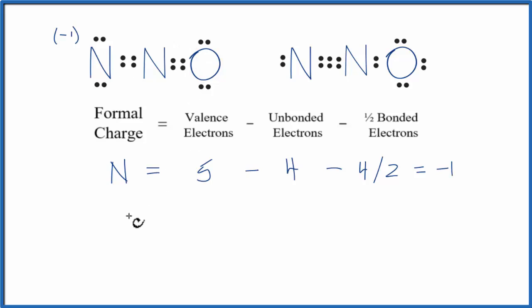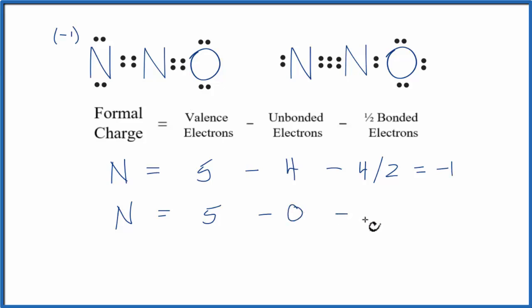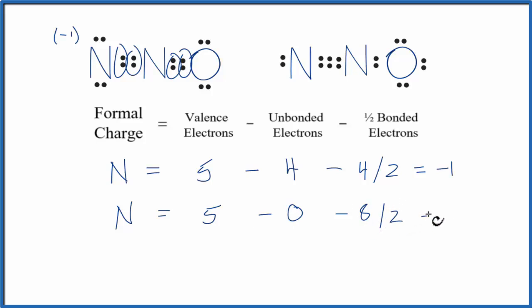Let's do the central nitrogen. Nitrogen has five valence electrons. Subtracting the unbonded — for this nitrogen, they're all involved in chemical bonds, so we don't have any. Then one half of the bonded electrons: two, four, six, eight, divided by two gives four. Five minus zero, minus four, that equals positive one. So this nitrogen has a formal charge of plus one.